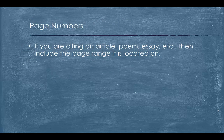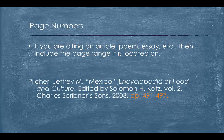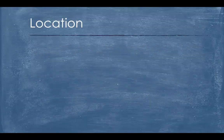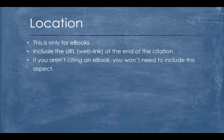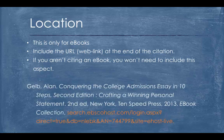If you are citing an article, poem, essay, etc., then include the page range it is located on. If you are citing an e-book, you will need to include the location — include the URL, also known as the web link, at the end of the citation. If you aren't citing an e-book, you won't need to include this aspect.